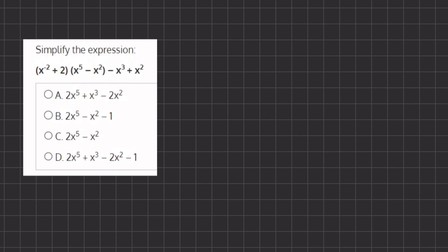All right, so in this problem we are given an expression and we are asked to simplify. Now the first thing we can do in order to simplify is foil these two parentheses because there are two expressions in parentheses being multiplied to one another. So let's foil them out.